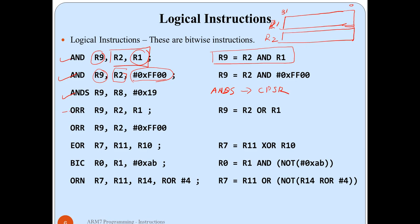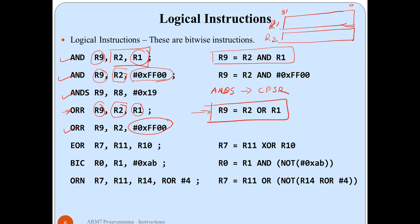The OR instruction is used to perform a logical OR operation. Two numbers are stored in registers, the OR operation is performed, and the result is stored into R9. Similarly, you can use an immediate value instead of a register for the second operand. For XOR (EOR), in the same way two numbers are stored in R10 and R11, and the result is stored into R7.